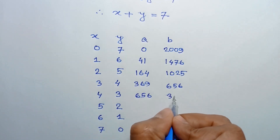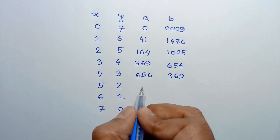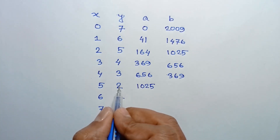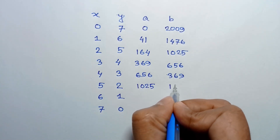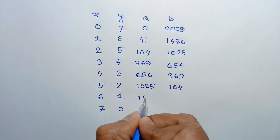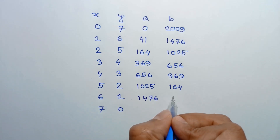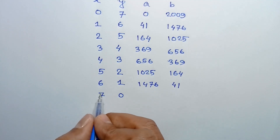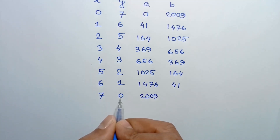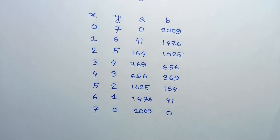When x equals 4, a equals 656 and b equals 369. When x equals 5, a equals 41 times 25 equals 1025, and b equals 41 times 4 equals 164. When x equals 6, a equals 1476 and b equals 41. Finally, when x equals 7, a equals 2009 and b equals 0.